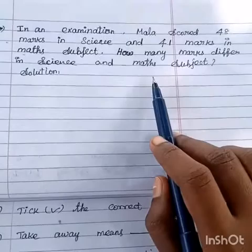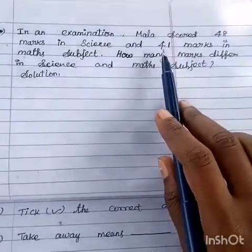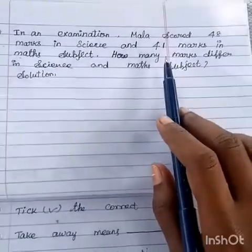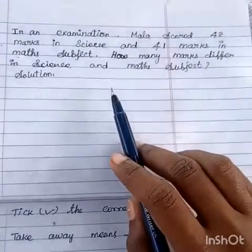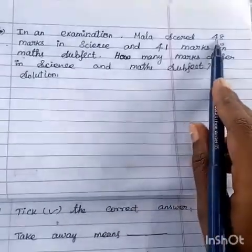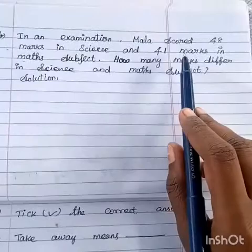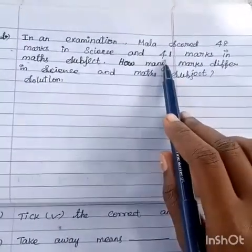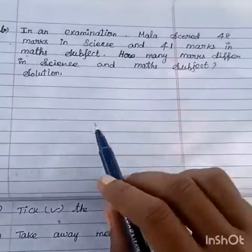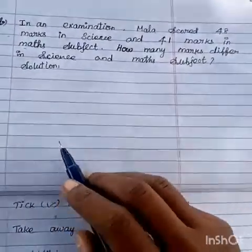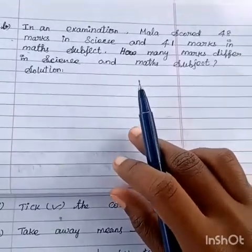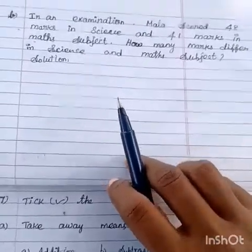Word problems. Chitti bought 45 eggs out of which 12 rotten. How many eggs were good? In an examination, Mala scored 48 marks in Science and 41 marks in Maths subject. How many marks differ in science and maths subject?